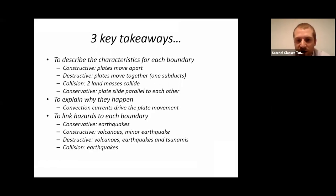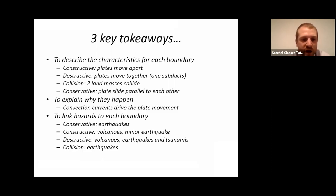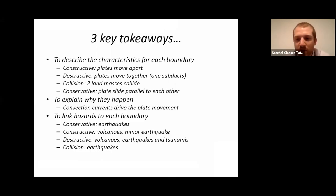What hazards do we expect to find at each boundary? At a conservative boundary where they're sliding past, it's only going to be earthquakes. At a constructive margin where the plates are being pulled apart, there might be minor earthquakes but mainly volcanoes — and these tend to be more gentle shield volcanoes. Destructive boundaries will have powerful composite volcanoes, powerful earthquakes, and powerful tsunamis. At a collision margin, we'd expect to find mainly earthquakes. Hopefully that's given you something to take away from the lesson — thank you very much for joining and we'll see you soon.